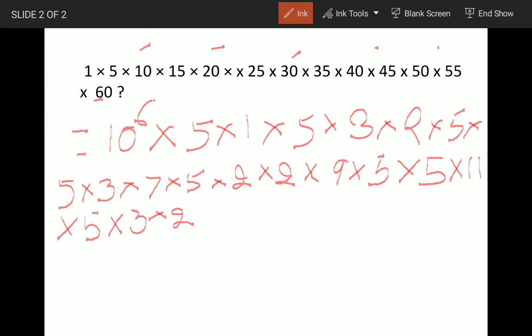So you will find that there are many 5s, but 2s are limited. We will count the number of 2s: 1 here, 2, 3, and 4. So we have 10 to the power 6 into 10 to the power 4.